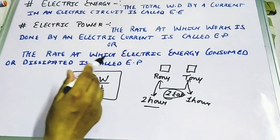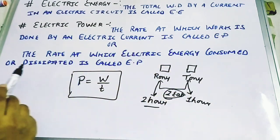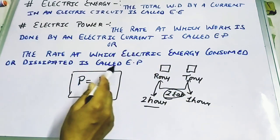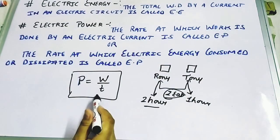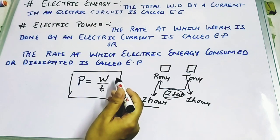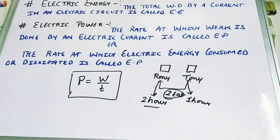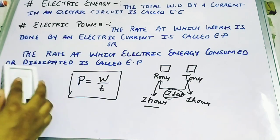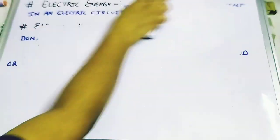The rate at which electrical energy is consumed or dissipated is called electric power. So power is work per unit time.